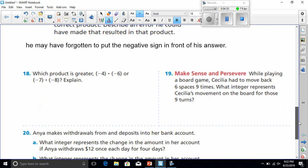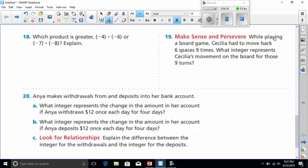Next, we're going towards number 19. It says make sense and persevere. While playing a board game, Cecilia had to move back 6 bases 9 times. What integer represents Cecilia's movement on the board for those 9 turns? Well, if you move back 6 places, that's a negative 6. And since it's 9 times, you're multiplying negative 6 times positive 9. Well, negative times a positive will give us a negative answer. And 6 times 9 is 54. So I would have to say our answer is going to be negative 54.